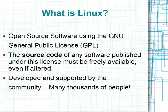So what is Linux? Linux is an open source operating system which uses the GNU General Public License, which means the source code is freely available even if altered by the community. If you request the source code, you should be able to get a copy of it. The source code is the base code for how the operating system communicates with hardware and the user — it's basically the heart of the operating system.